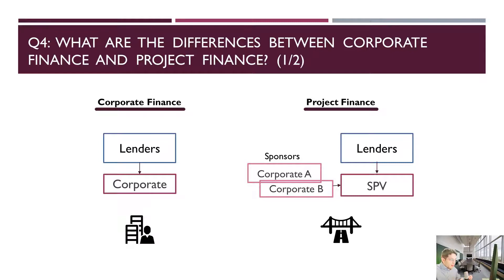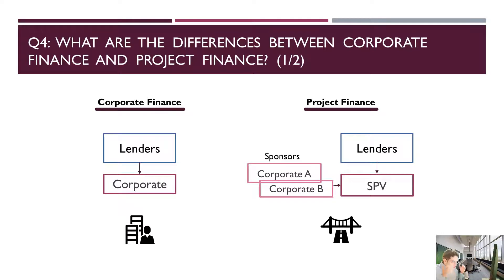Lenders could require that all assets the project company — the SPV — owns be given as collateral to them, so they can protect themselves. Even though project finance is a cash flow-based lending technique highly dependent on future cash flows, lenders could still ask for collateral. That collateral is called a security package.